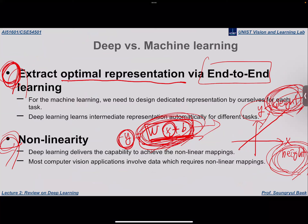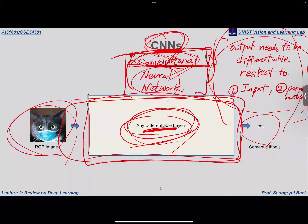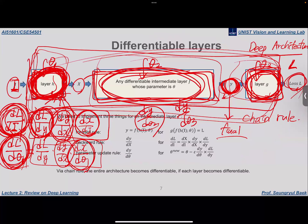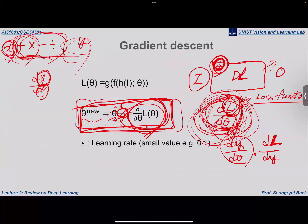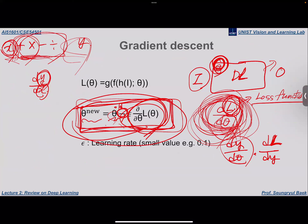Deep learning can learn intermediate representations in an optimal way via end-to-end training, and it can represent non-linearity. Each individual layer of the deep learning architecture should be differentiable with respect to their input and also their parameters. When we compose the entire network using differentiable layers, the entire network becomes differentiable.